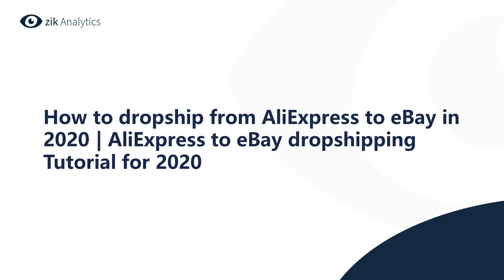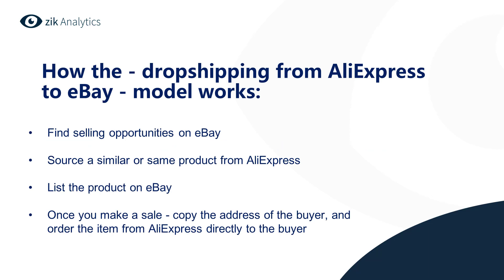So, how to dropship from AliExpress to eBay in 2020. We're going to start off with how the dropshipping from AliExpress to eBay model works. We broke it down into four parts. First, you're going to find selling opportunities on eBay. Once you find a selling opportunity, you're going to source a similar or same product from AliExpress. Then you're going to list that product on eBay. Once you make a sale, copy the address of the buyer and order the item from AliExpress directly to the buyer's address.